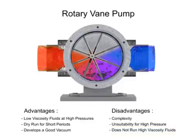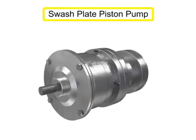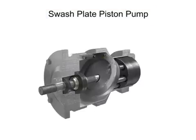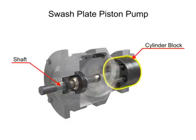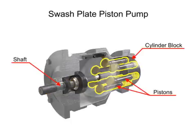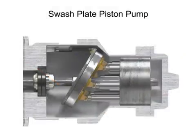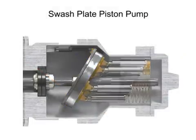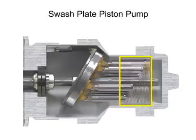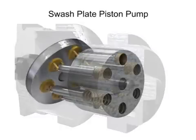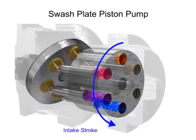Piston pumps come in many different forms. A swash plate is a device used to translate the motion of a rotating shaft into the reciprocating motion of a piston. Swash plate piston pumps have a rotating shaft connected to a cylinder block containing pistons, which are pressed against a stationary swash plate that sits at an angle to the cylinder. As the shaft rotates, the pistons move against the swash plate, causing them to reciprocate within the piston block. The pistons create a vacuum that forces fluid in during half a revolution and expels fluid during the other half.